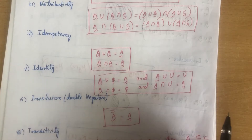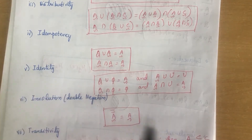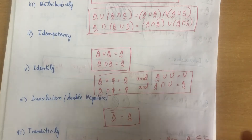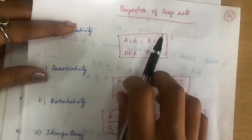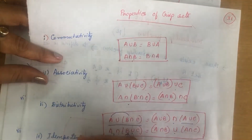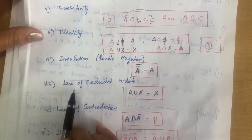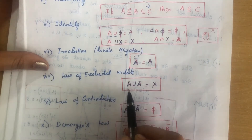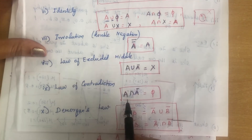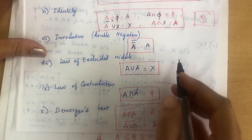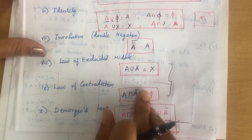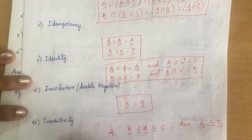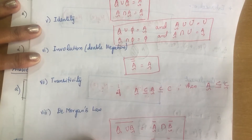Only two properties from crisp sets do not hold in fuzzy sets: the law of excluded middle (A ∪ Ā = X) and the law of contradiction (A ∩ Ā = ∅). That is why fuzzy sets have only eight properties instead of ten.